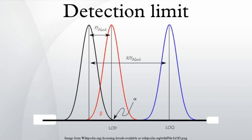For a signal at the LOD, the alpha error is small. However, the beta error is 50% for a sample that is at a concentration at the LOD.